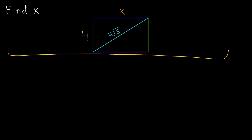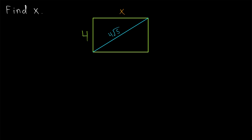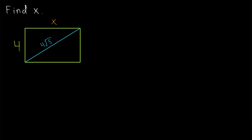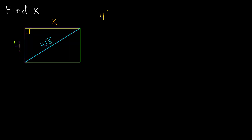Here we've got a little bit of an algebra problem asking something different. We're given a side length of our rectangle and the diagonal length, and we want to find x, the missing side. We apply the same method, but instead of solving for the diagonal we solve for the other side. We have a right triangle, so applying the Pythagorean theorem: 4 squared plus x squared equals the hypotenuse 4√5 squared.